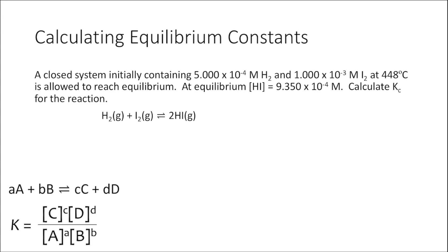Let's try a problem. We have a closed system that initially contains 5×10⁻⁴ M H2 and 1×10⁻³ M I2. These are our initial concentrations of our reactants. We allow the system to reach equilibrium and at equilibrium determine the concentration of HI to be 9.35×10⁻⁴ M. Let's calculate our equilibrium constant. I know I'll need to write my equilibrium constant expression, and to do that I need concentrations of reactants and products at equilibrium.